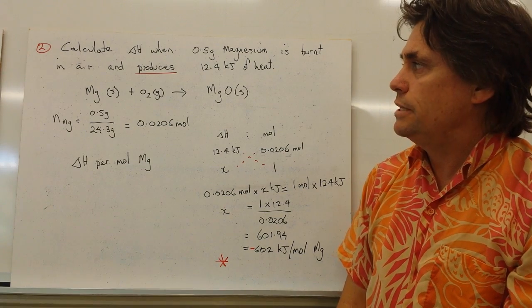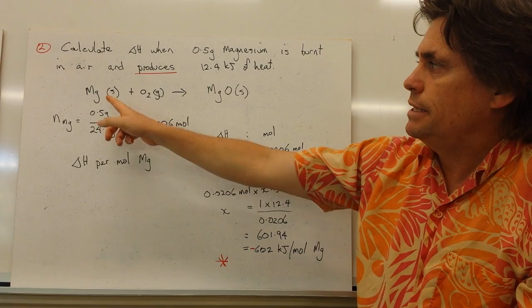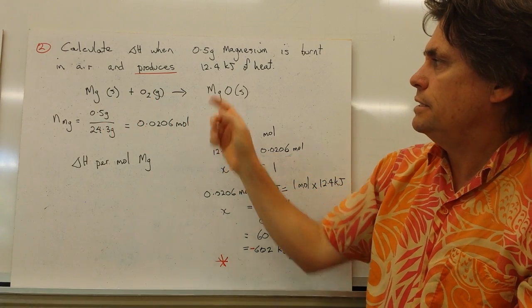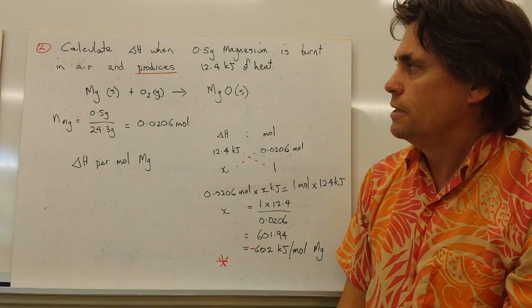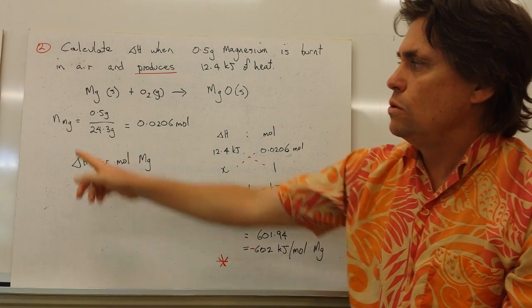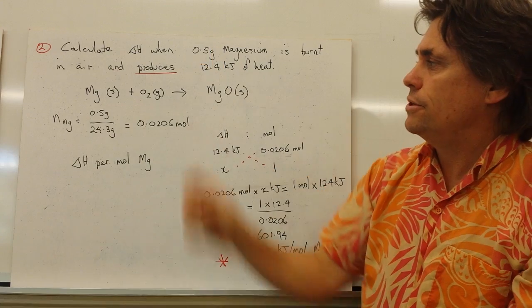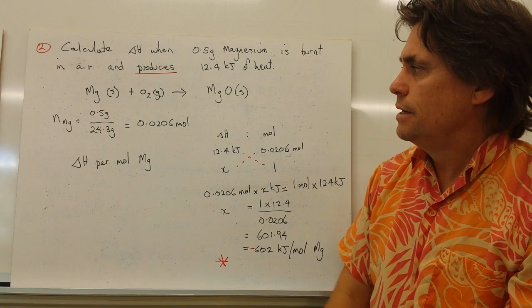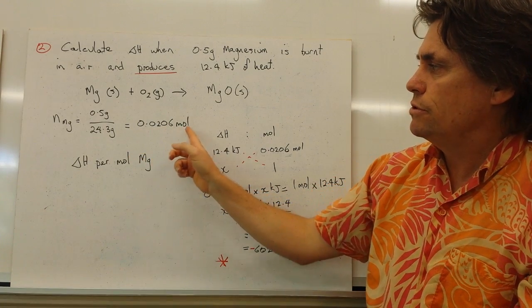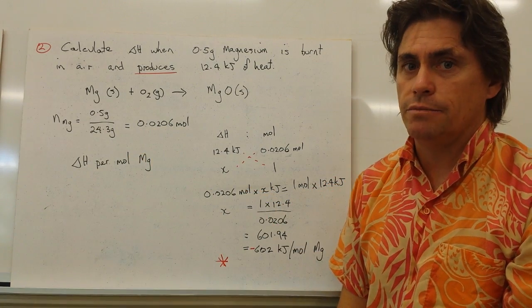So the first thing we need to do is write a balanced equation. So magnesium plus oxygen gives you magnesium oxide, a one to one to one relationship. We then need to calculate the moles of magnesium that we've actually burnt. So we've got 0.5 grams over the molar mass of 24.3 grams, which gives us 0.0206 moles of magnesium that we've burnt.